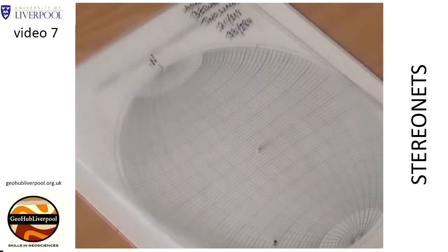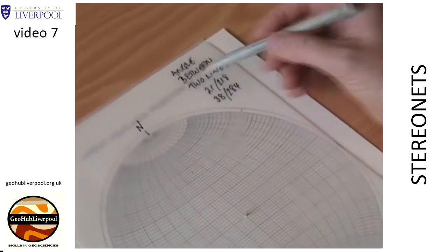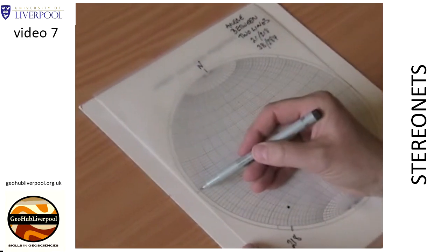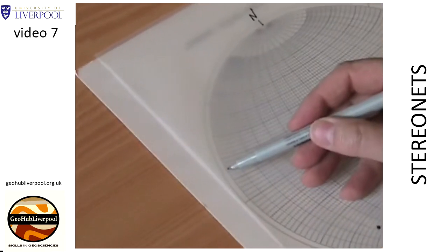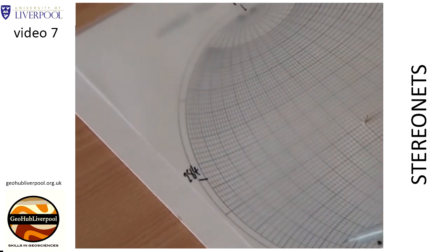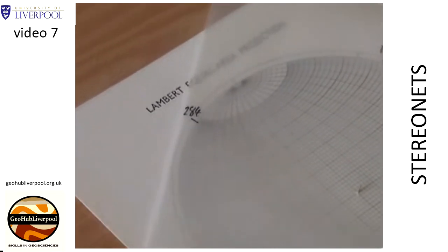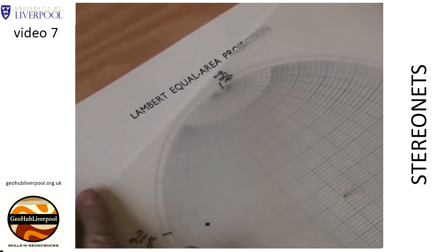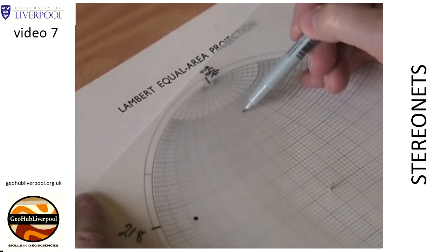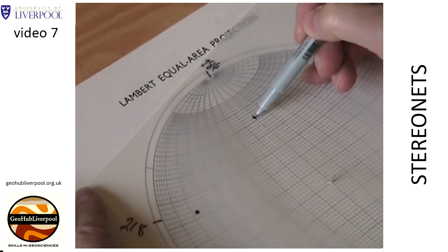Rotate the tracing paper so that the second mark lies on the north pole of the stereo net. The line plunges at 38 degrees, so count the small circles from the north pole on the primitive circle. Mark the point that shows a plunge of 38 degrees on the tracing paper.